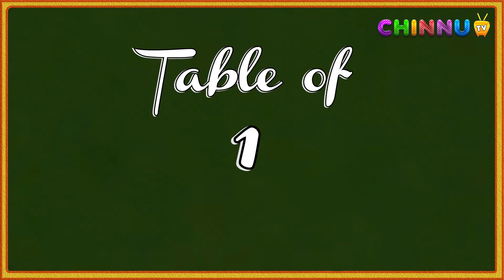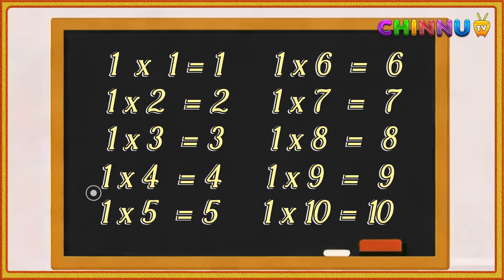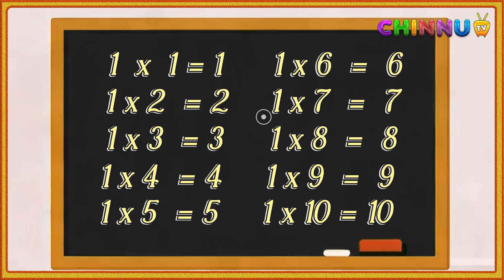Let's learn the table of one one more time. 1 one is 1, 1 two is 2, 1 three is 3, 1 four is 4, 1 five is 5, 1 six is 6, 1 seven is 7, 1 eight is 8.